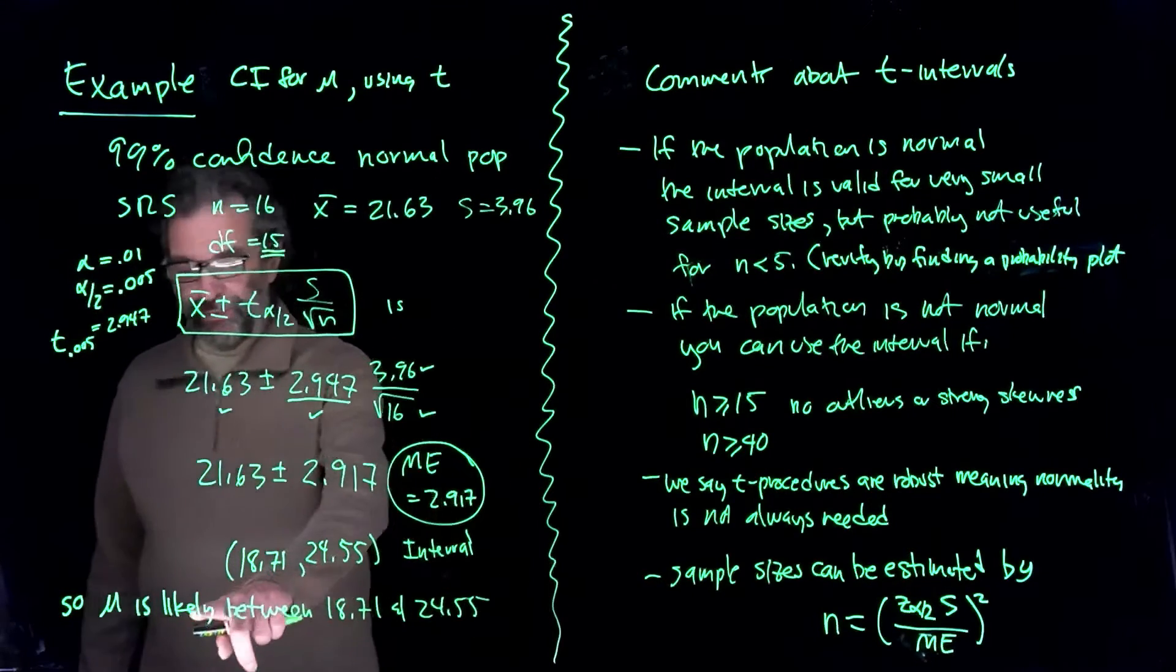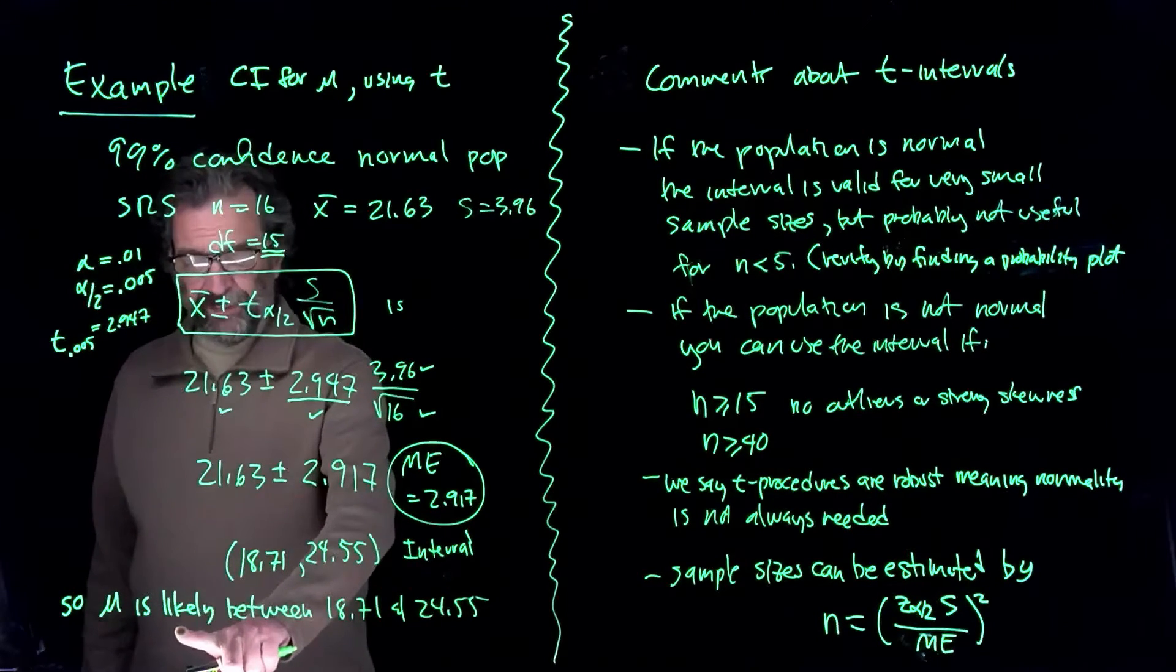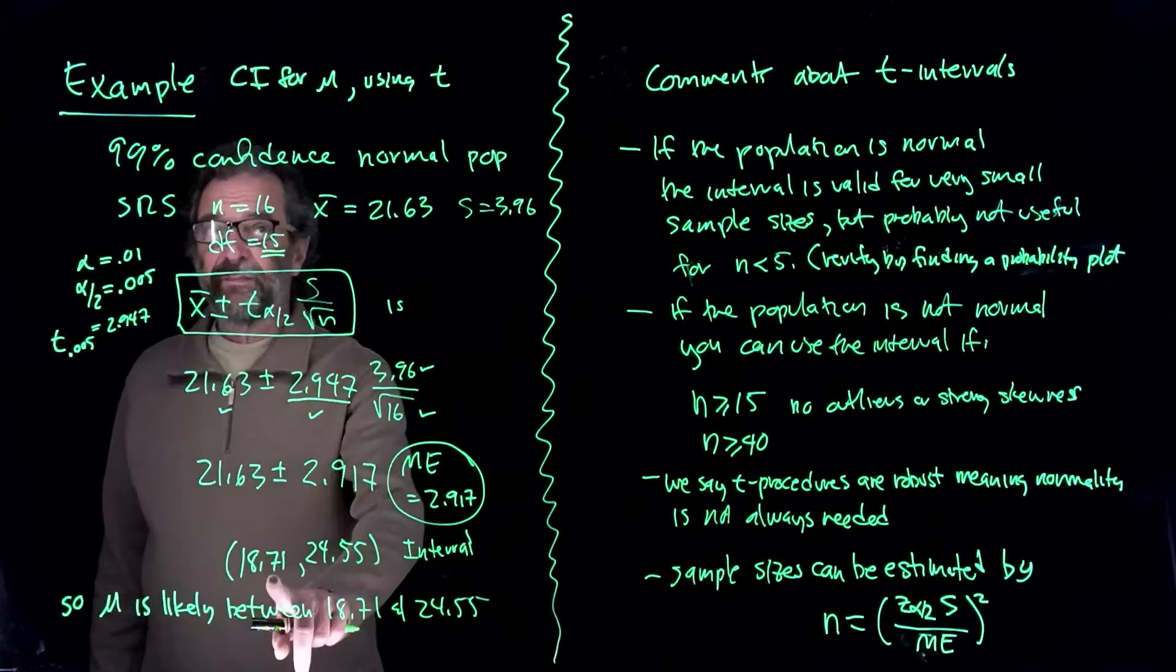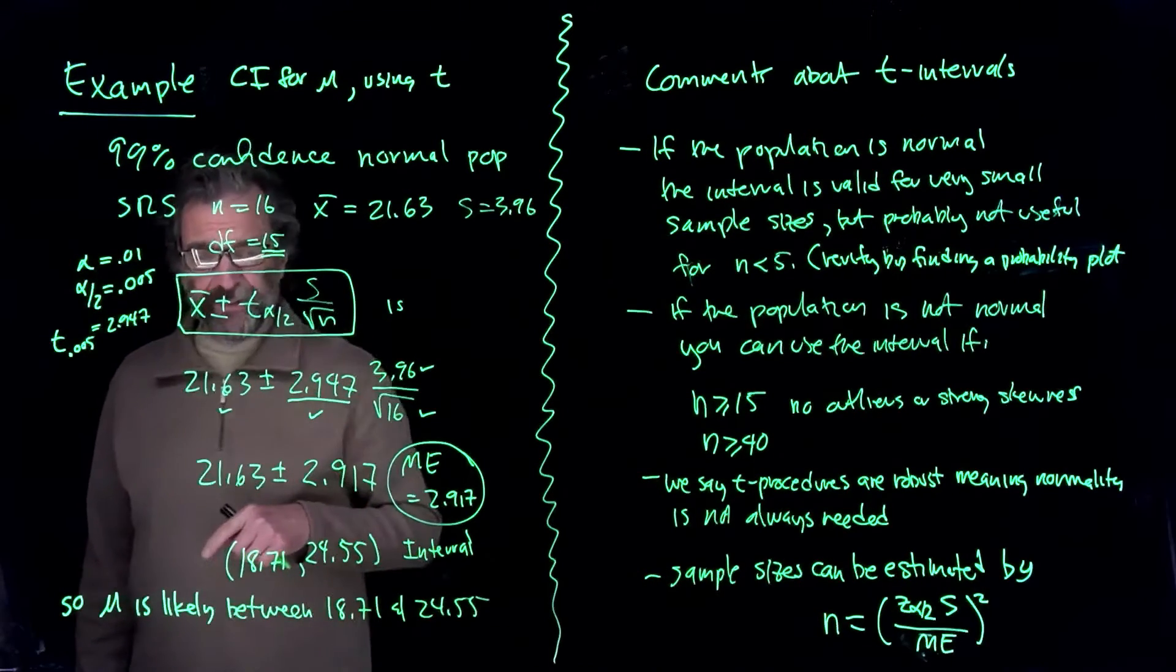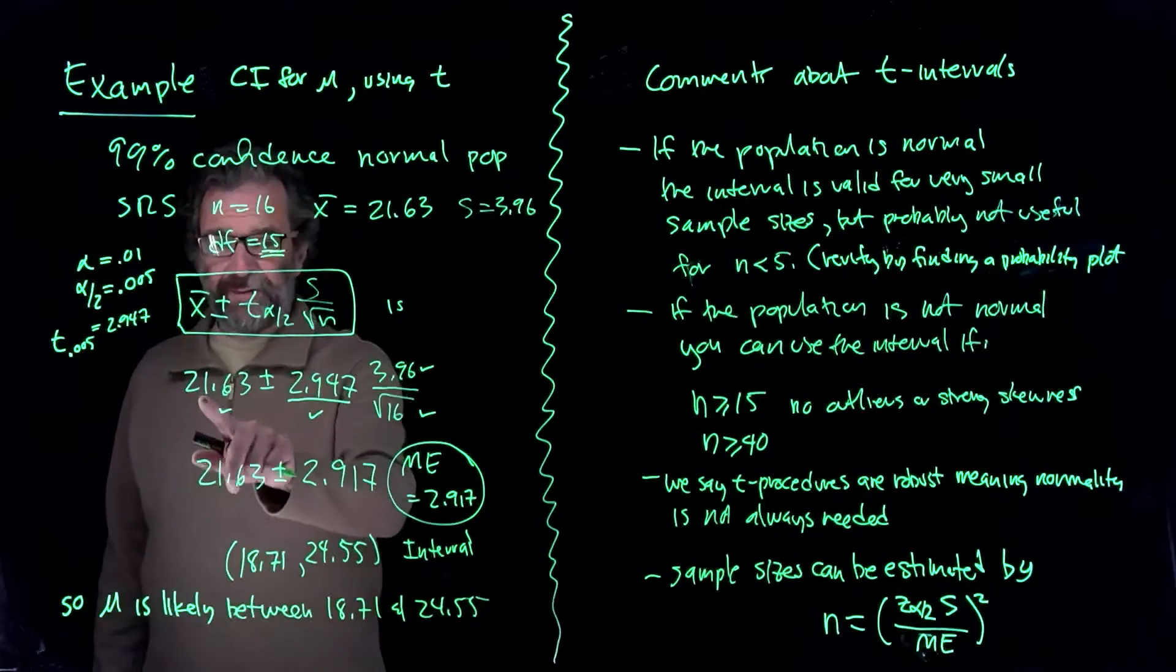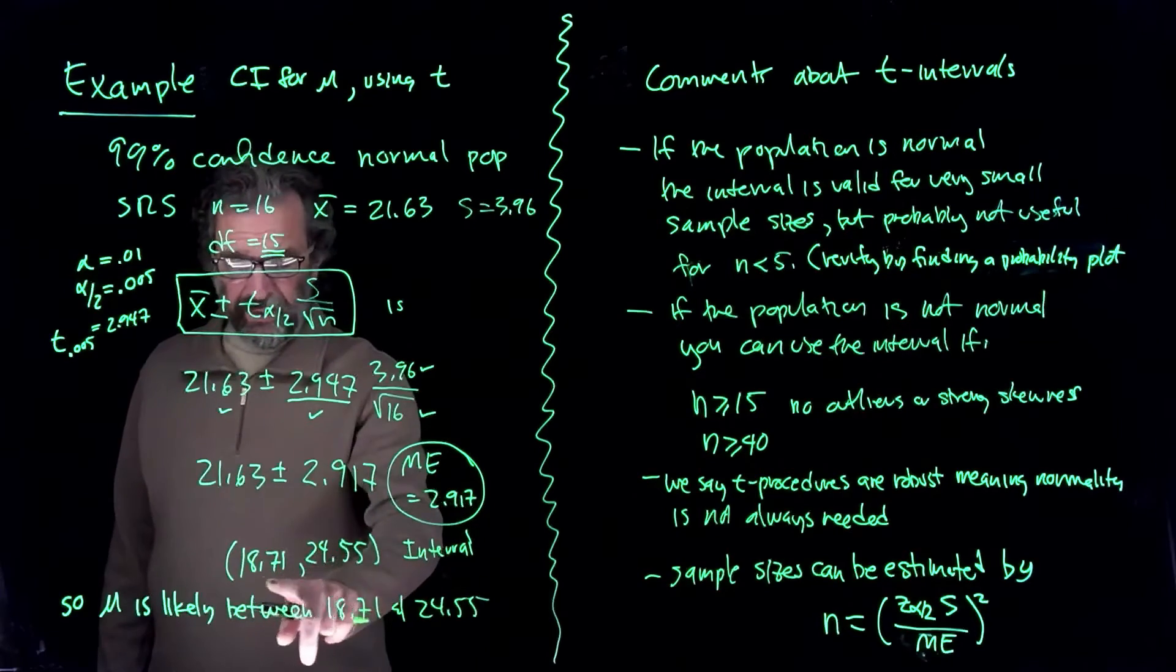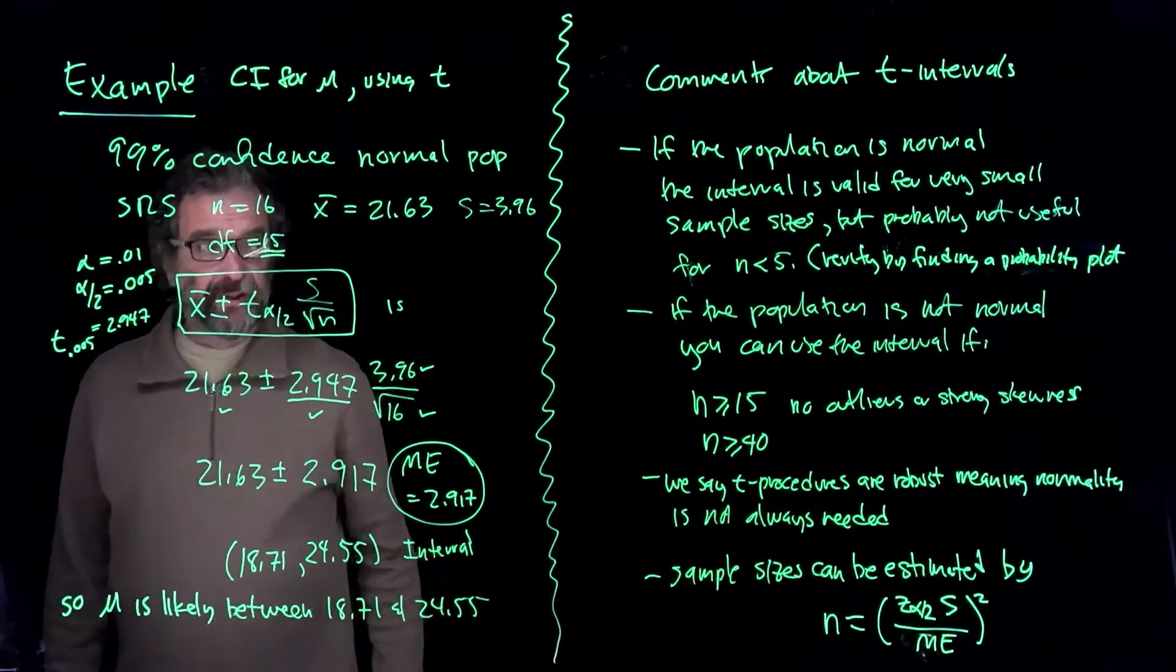So we're more sure than usual because 99% of the time this covers the true value. That's 99% of samples. The value of the mean and standard deviation are such that when you compute this, you get an interval that contains the true population mean.